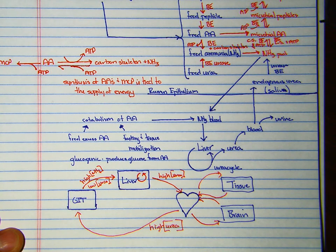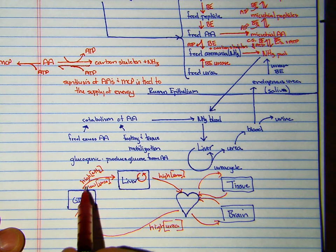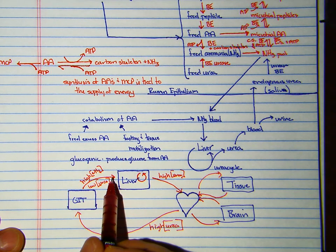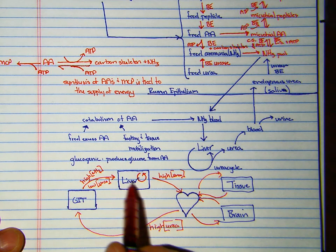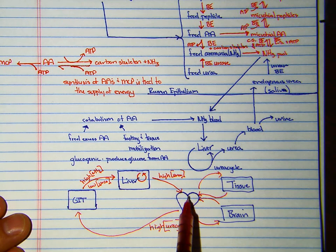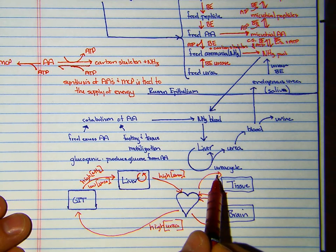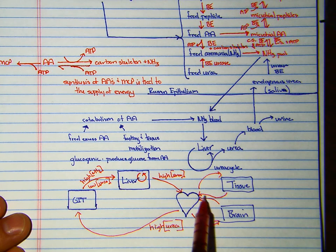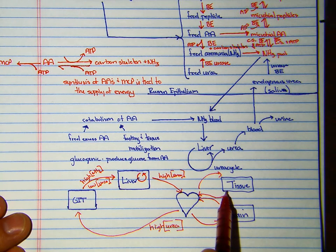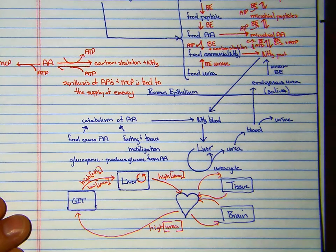We can think about this with glucose as well. The blood going to the gastrointestinal tract would have a lower blood glucose concentration than the blood that leaves if we've been fed. The liver will pull this out slowly over time and then it goes back to the heart. We can have high glucose going to the tissue and then low glucose going back to the heart because the tissue has taken the glucose out and is using it for energy. Same thing with the brain.